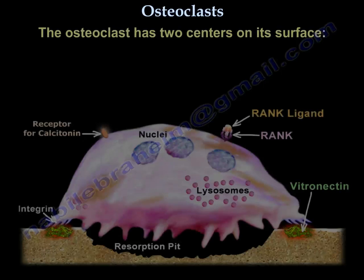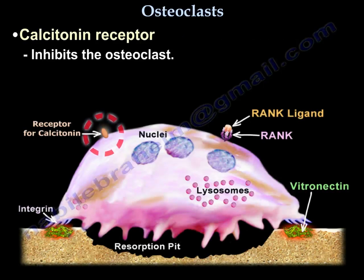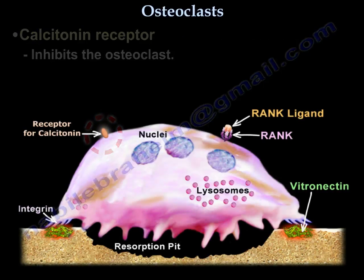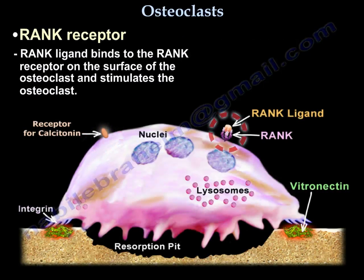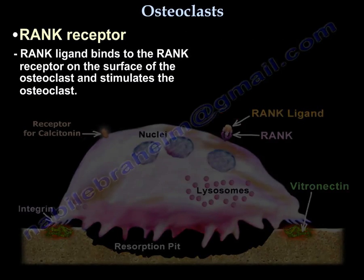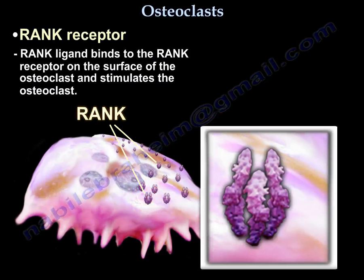The osteoclast has two receptors on its surface. The calcitonin receptor, which inhibits the osteoclast, and the RANK receptor. The RANK ligand binds to RANK at the surface of the osteoclast and stimulates it.